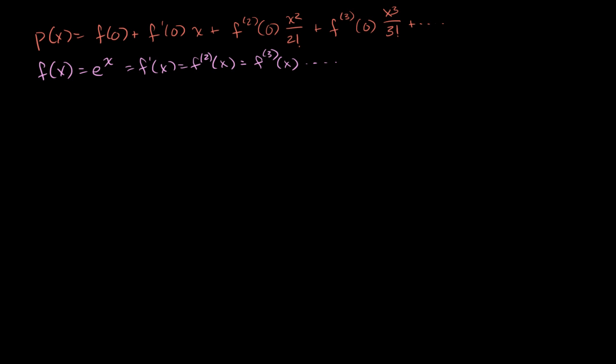Anyway, with that said, let's take its Maclaurin representation. So we have to find f of 0, f prime of 0, the second derivative of 0. Well, when you take e to the 0, e to the 0 is just equal to 1.